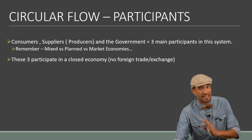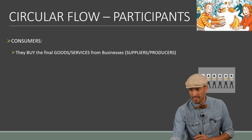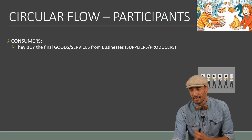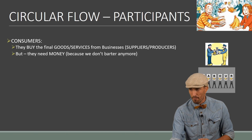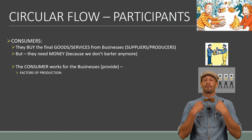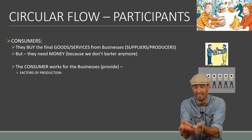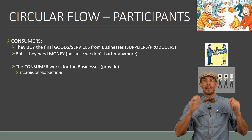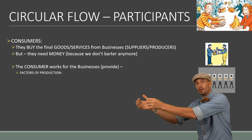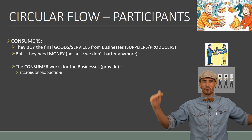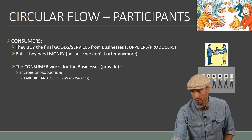When we look at the consumer as a participant, they buy the final goods and services from the suppliers, but they need money. They get money by providing the factors of production to businesses. So consumers own the factors of production, sell them to businesses, and then use that income to buy goods and services which the businesses produce using those same factors of production.